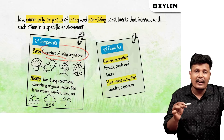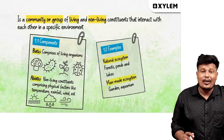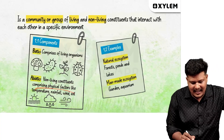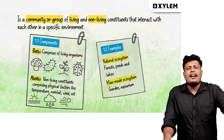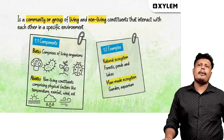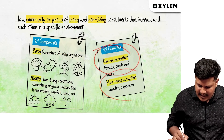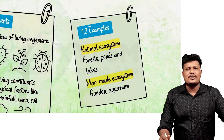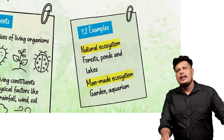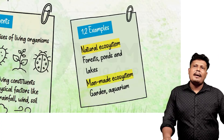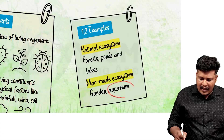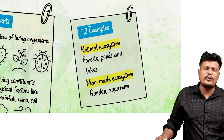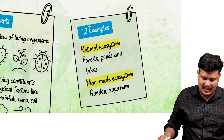Biotic refers to comprising living organisms. Abiotic refers to non-living constituents, comprising physical factors like temperature and rainfall. We also have natural and man-made ecosystems.